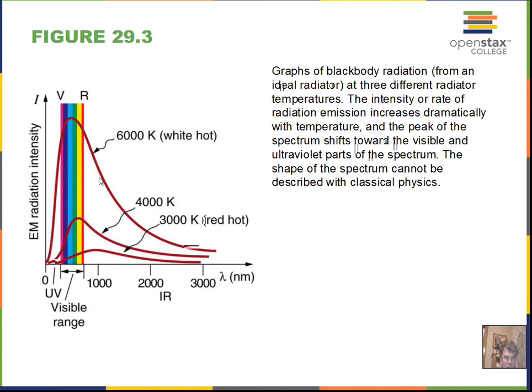Increasing the temperature to 6,000 kelvin shifts the peak of the blackbody curve into the visible spectrum, though there's still wasted energy in the infrared. As temperature decreases, the peak shifts toward the infrared. This relationship between temperature and the peak of the curve is Wien's law, and Planck's derivation of the formula correctly predicts the peak position.